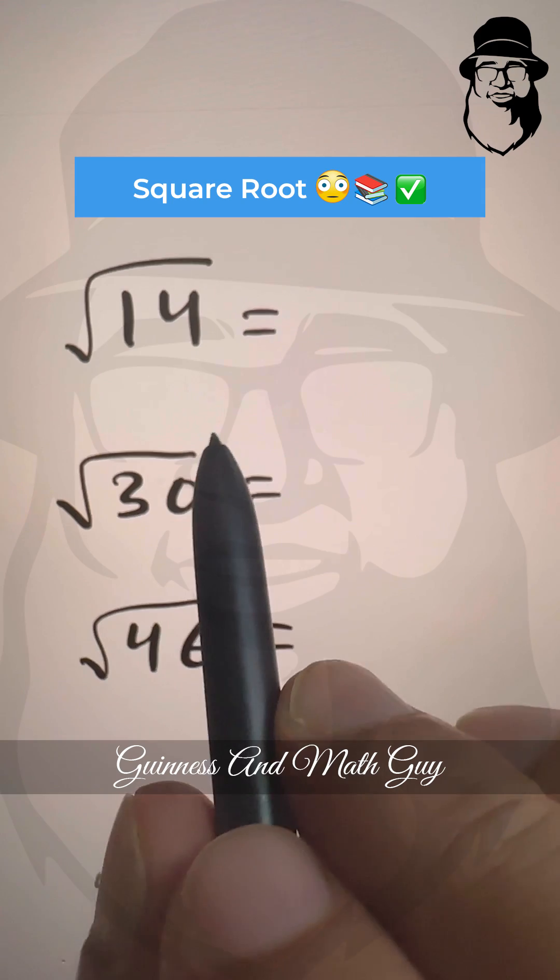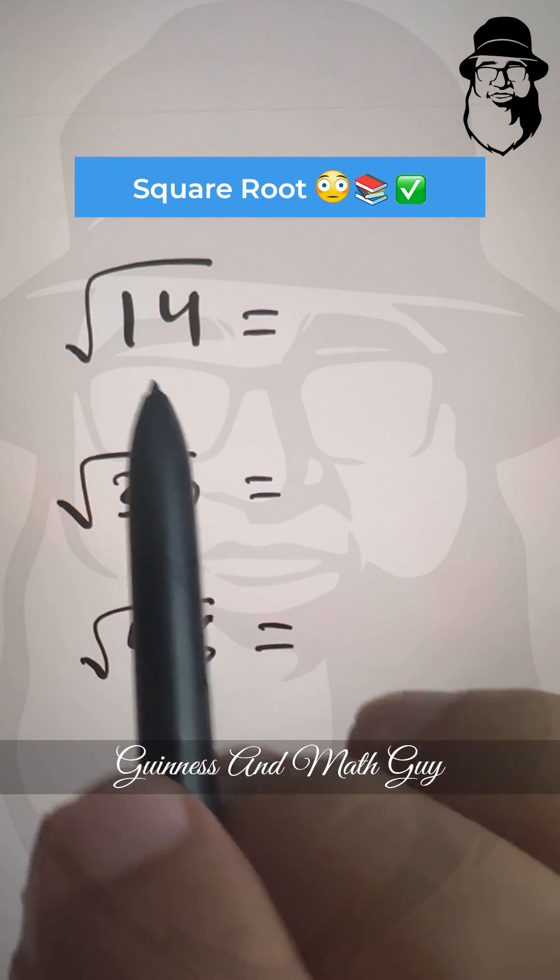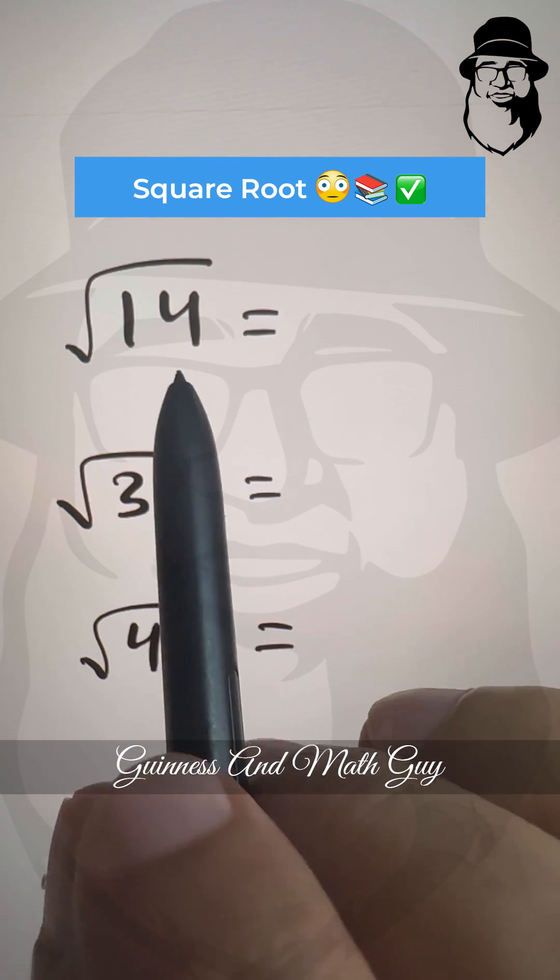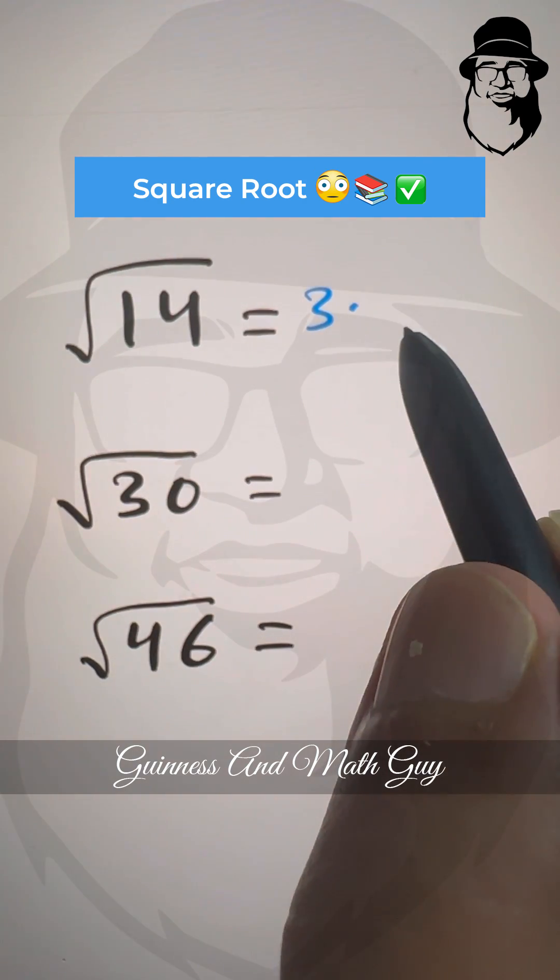So let's take 14. We know 3 squared is 9, then 4 squared is 16, that is above 14, so we'll take 3. So the answer will be 3 point something, right?